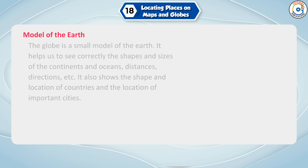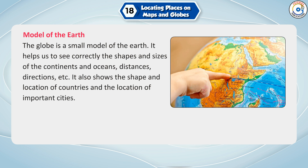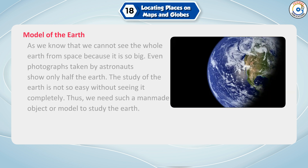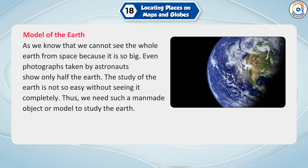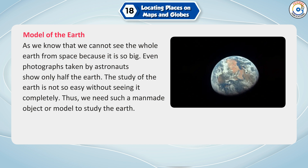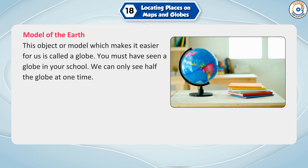Model of the Earth: The globe is a small model of the Earth. It helps us to see correctly the shapes and sizes of the continents and oceans, distances, directions, etc. It also shows the shape and location of countries and the location of important cities. We cannot see the whole Earth from space because it is so big, and even photographs taken by astronauts show only half the Earth. Thus, we need a man-made model to study the Earth, and this model is called a globe.